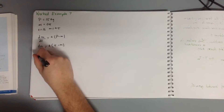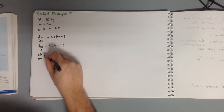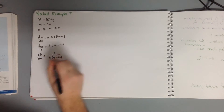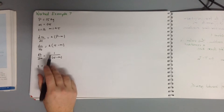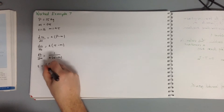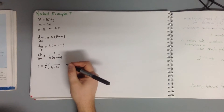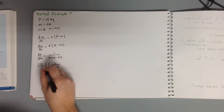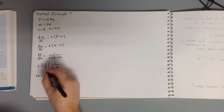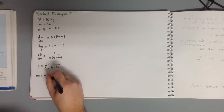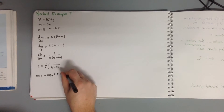We need to invert this to get dT/dM, so dT/dM equals 1 over K times (15 minus M). Integrating both sides, we get (1/K) times the integral of 1 over (15 minus M) dM. Multiplying through by K gives KT equals negative log base e of the modulus of (15 minus M) plus C.